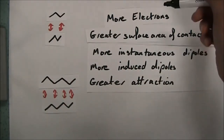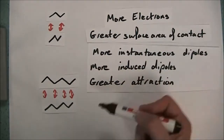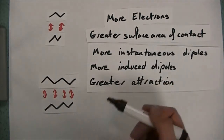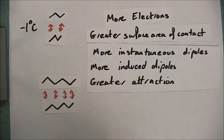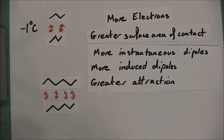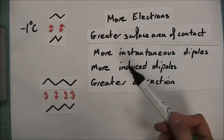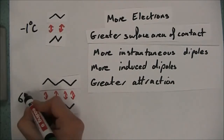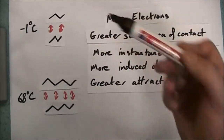Because there are fewer electrons in butane and a smaller surface area of contact, there will be fewer instantaneous dipoles, fewer induced dipoles, and because of that the attraction will be less between the two molecules. We find the boiling point of butane is minus one degrees C — a relatively low boiling point. If we look at hexane, because we have more electrons, greater surface area of contact, more instantaneous dipoles producing more induced dipoles giving a greater overall attraction, we find that hexane actually boils at 68 degrees C. So hexane is a liquid at room temperature whereas butane is a gas.